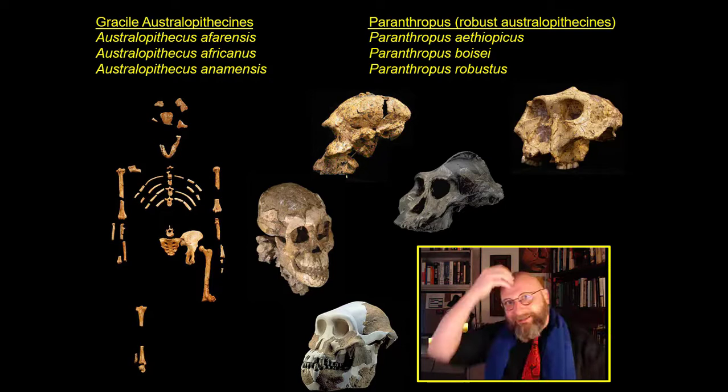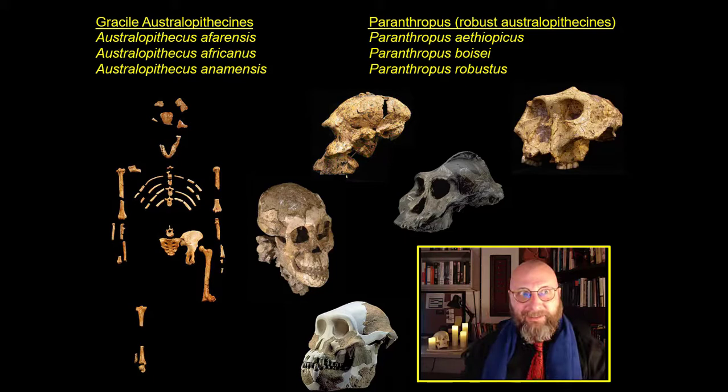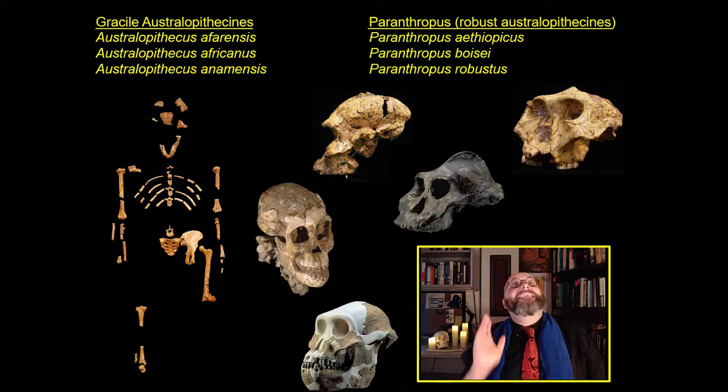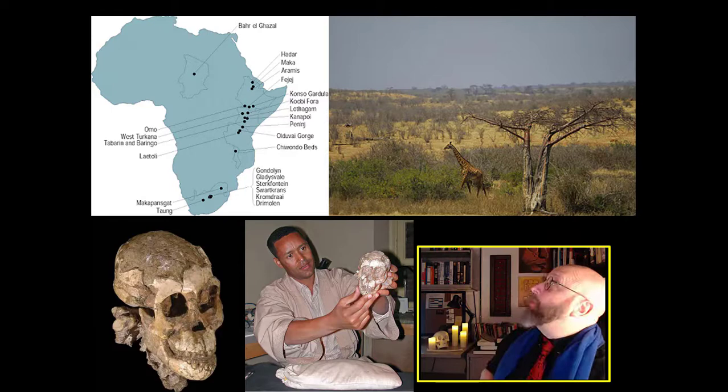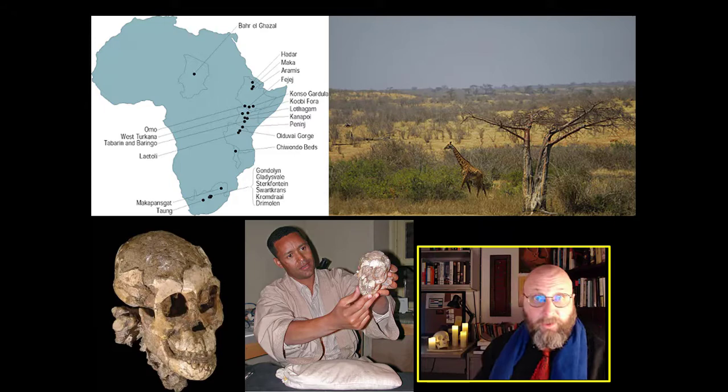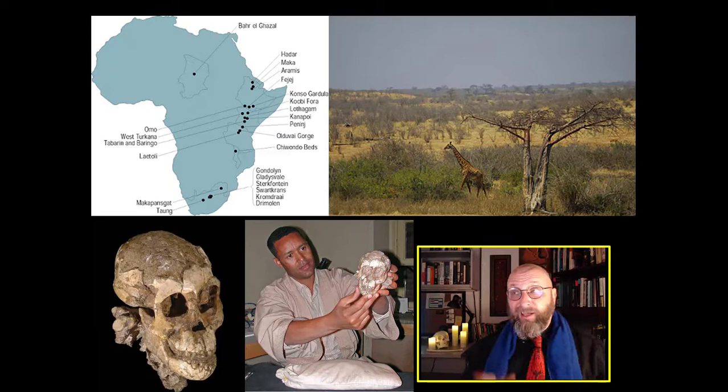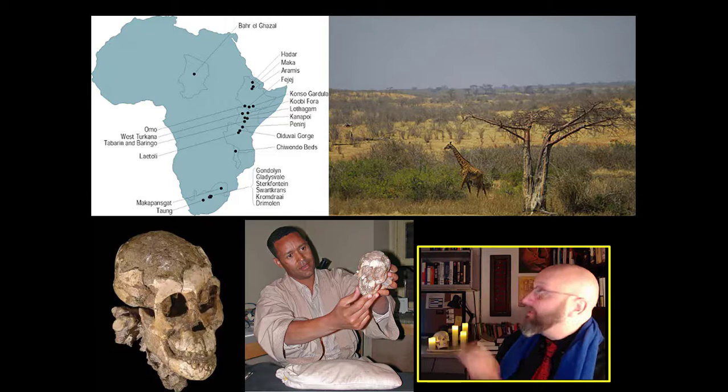We don't actually know which australopithecus species leads to humans. The best candidate is Lucy herself — australopithecus afarensis — with slightly bigger brains, slightly more efficient bipedal locomotion, and slightly more human-like features. Another candidate is australopithecus africanus, the southern version of afarensis. But we don't know. It might even be something completely different, like one of these huge-jawed, sagittal-crested ground apes.